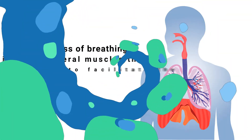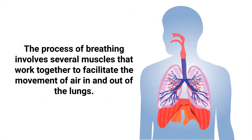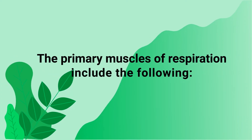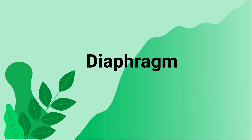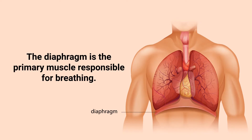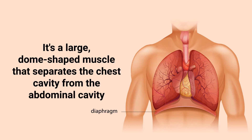So if you're ready, let's get into it. The process of breathing involves several muscles that work together to facilitate the movement of air in and out of the lungs. The primary muscles of respiration include the following: first is the diaphragm, which is the primary muscle responsible for breathing. It's a large dome-shaped muscle that separates the chest cavity from the abdominal cavity.